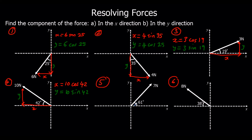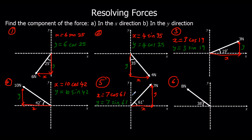Question 5: x is the adjacent, so x equals 7 cos 61. Y is the opposite, so y equals 7 sin 61. Both positive.